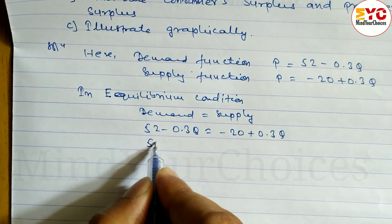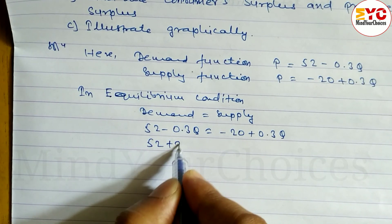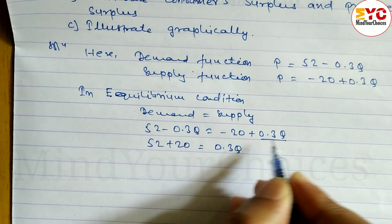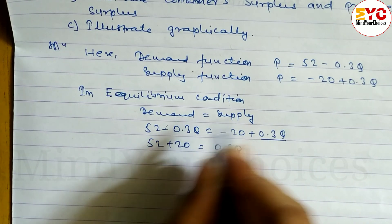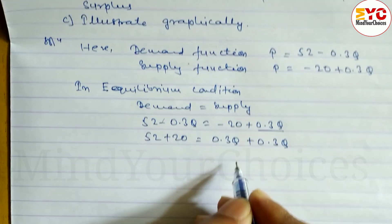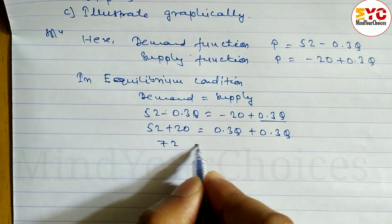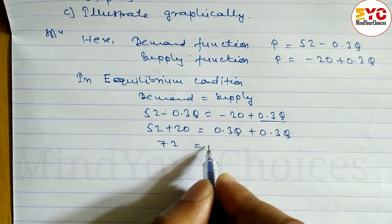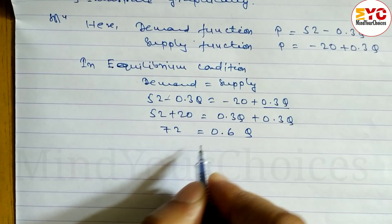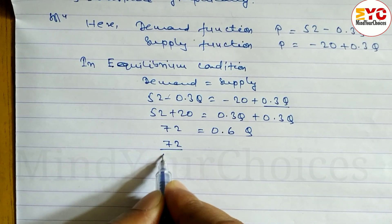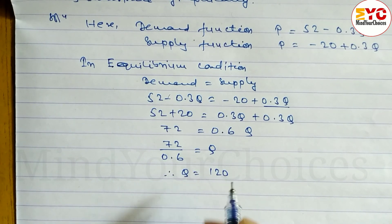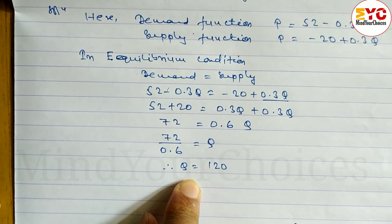So your 20 — bringing it to the left side: 52 plus 20 is equal to 0.3Q. The 0.3Q negative we have to take to the right side. So when you add, we get 72 is equal to 0.3 plus 0.3, we get 0.6Q. Since this is multiplication, we have to divide: 72 by 0.6 is equal to Q. The value of Q is 120. That is the equilibrium quantity.